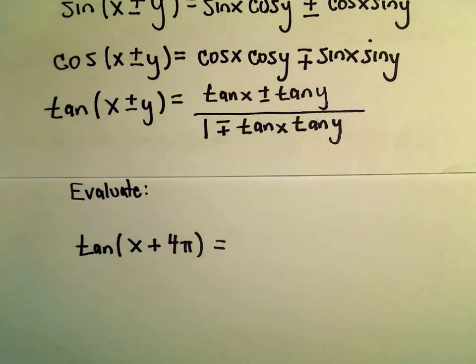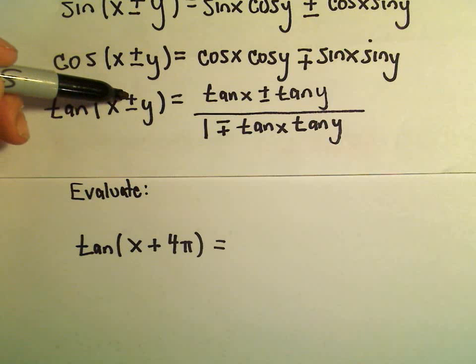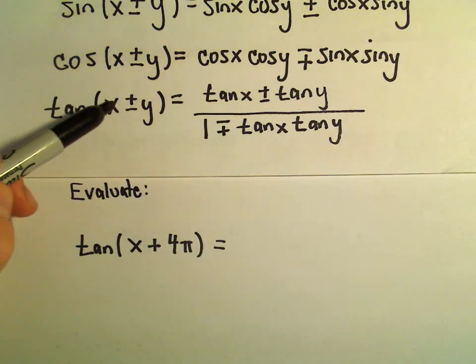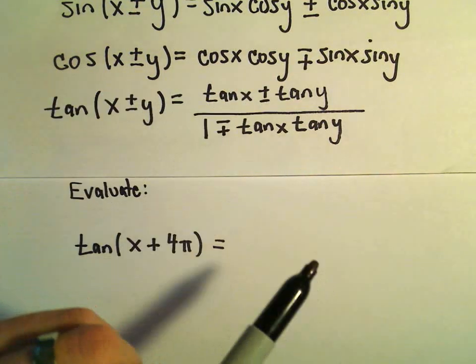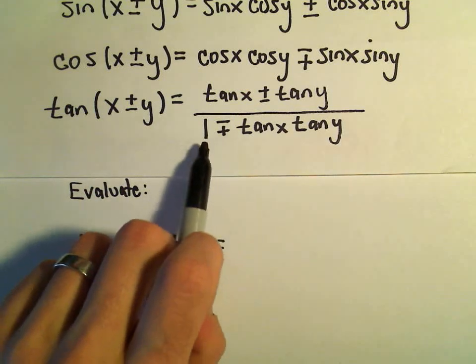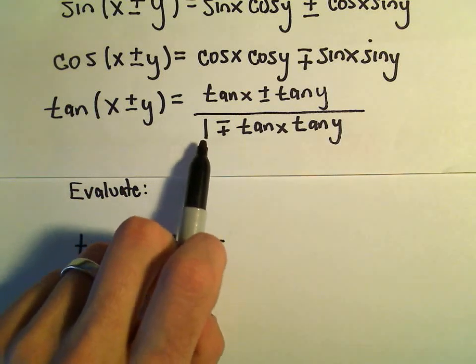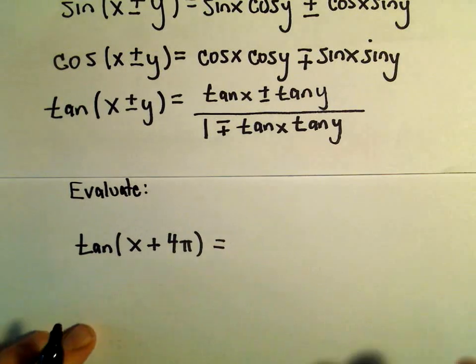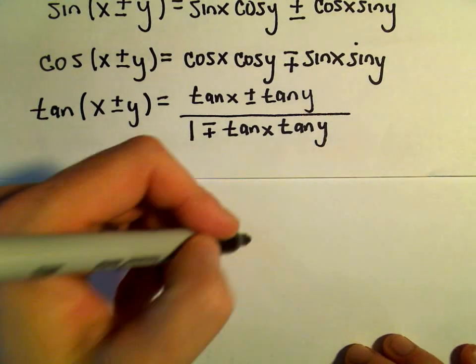We've got our identity here. It says tangent of x plus y. If there's a plus sign, we use tangent of x plus tangent of y in the numerator. But then in the denominator, you take the opposite sign. We'll use 1 minus tangent x times tangent y. So in this case,